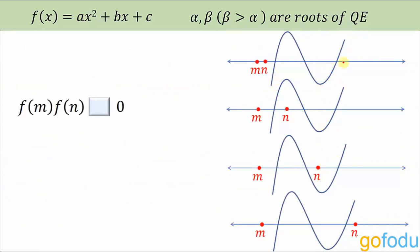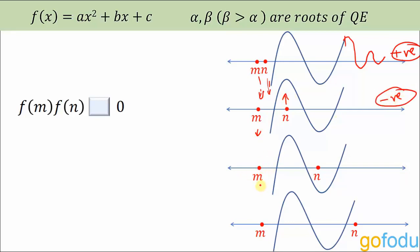These are graphs for higher degree equations — it doesn't have to be a cubic; it could be any higher degree equation. In the first case, there is no root lying between points m and n: f(m) is negative and f(n) is also negative, so their product is positive. In the second case, f(m) is negative and f(n) is positive, so the product is negative. In the third case, f(m) is negative and f(n) is also negative, so the product is positive.